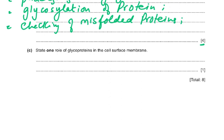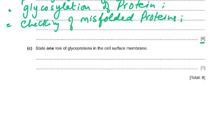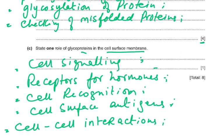Last part: State one role of glycoproteins in the cell surface membrane. The roles of glycoproteins are: cell signaling; receptors for hormones, chemicals, or molecules; cell recognition; cell surface antigens; cell-cell interactions. Any one of these would be fine. Cell signaling, receptors for hormones, cell recognition, cell surface antigens, and cell-cell interactions — that completes this paper. Thank you very much.